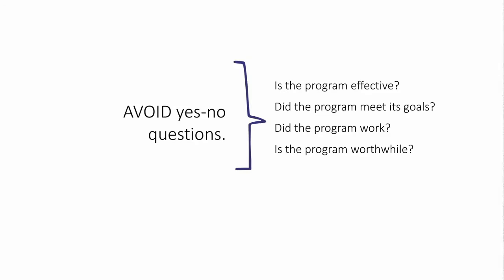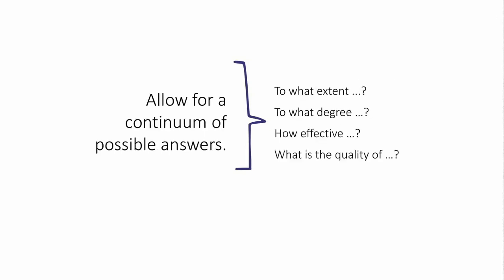We also want to avoid yes/no questions. These are essentially pass-fail questions, and finding that dividing line between whether something was effective or not, met its goals or not — especially for complex projects — is not easy and probably not that useful for stakeholders. Instead, we want to allow for a continuum of answers. You can easily fix yes/no questions by starting them with phrases like 'to what extent,' 'to what degree,' or more broadly 'what' or 'how.'